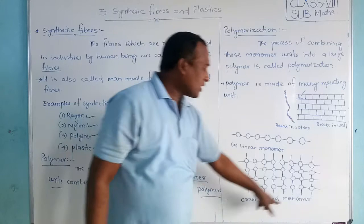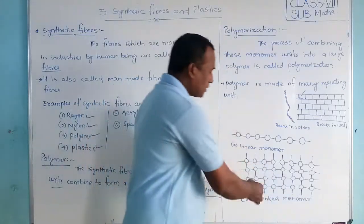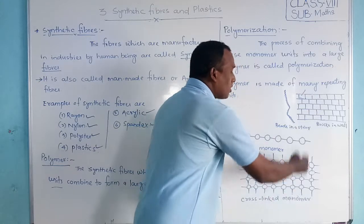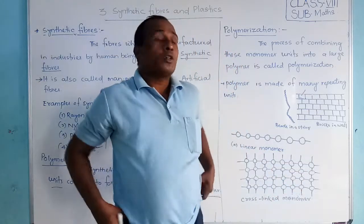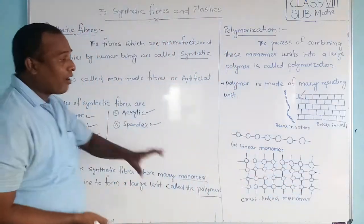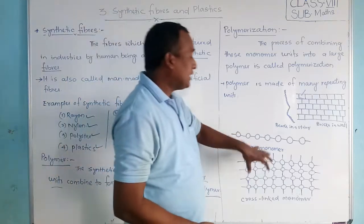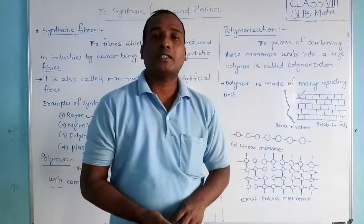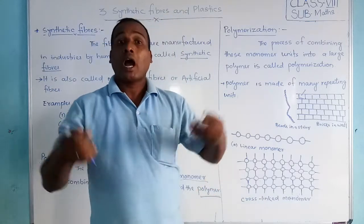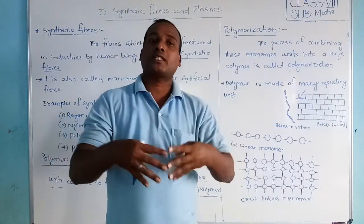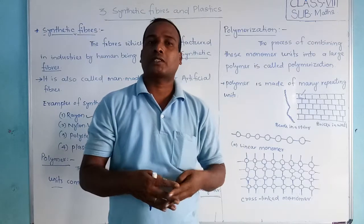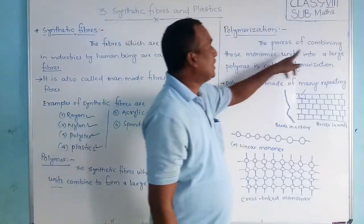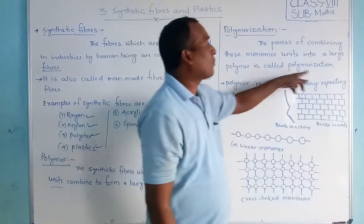This is a linear monomer and this is a cross-linked monomer — that means this line is there, this line is there, so these are the cross monomers. How this monomer is combining together — that process is called polymerization. The process of combining the monomer units into a large polymer is called polymerization.